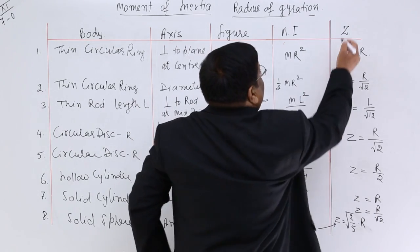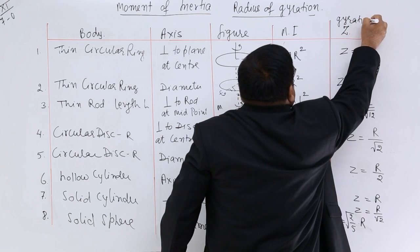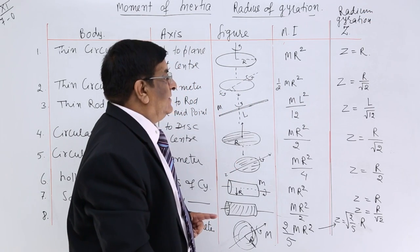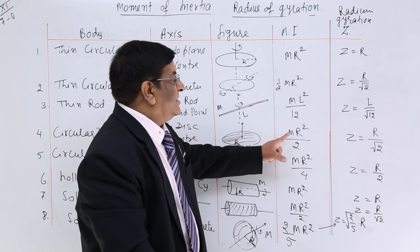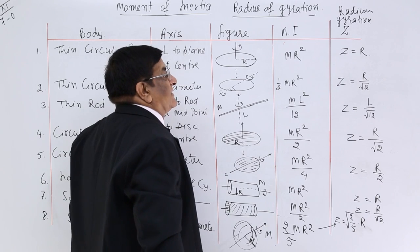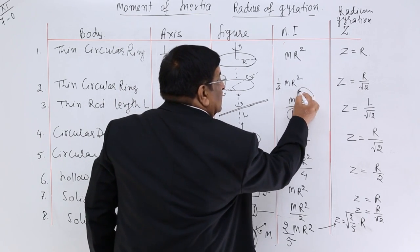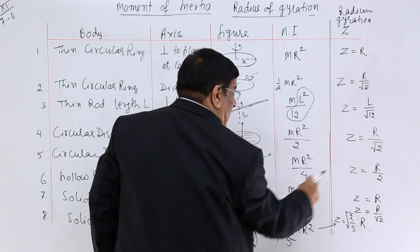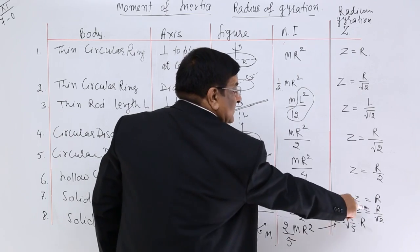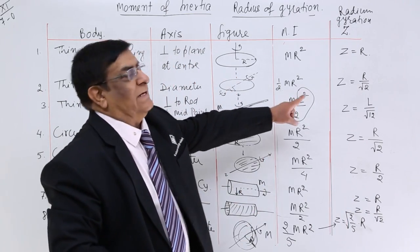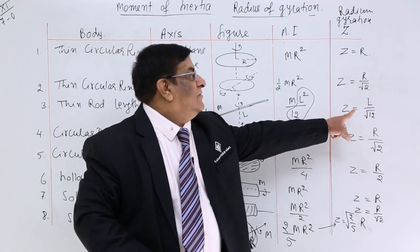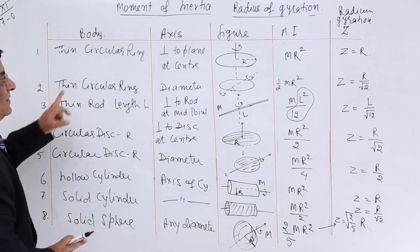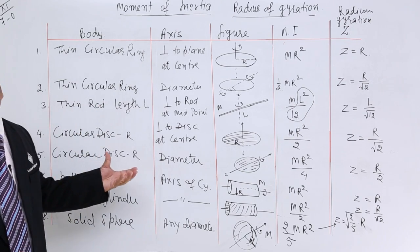Now for radius of gyration — mass m always cancels, and z² equals the remaining quantities. So z equals the square root of each corresponding expression. For each shape, z equals the square root of the moment of inertia formula divided by m. This is a simple method to find radius of gyration, and this chart must be remembered as it will be used for various calculations in rotational motion.